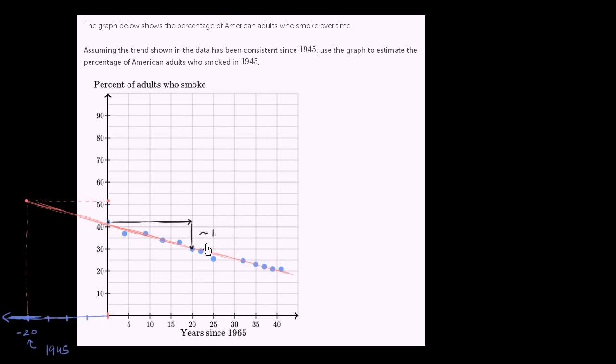It's approximately down 10%. So that little squiggly line, I'm just saying approximately negative 10% every 20 years. Negative 10% every 20 years.